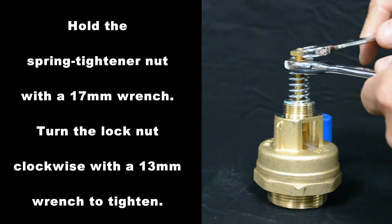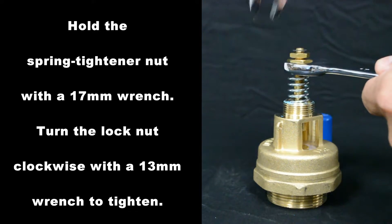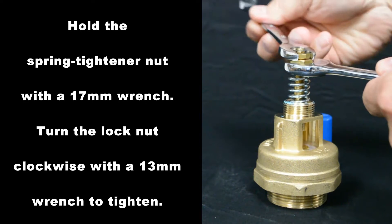Hold the spring tightener nut with a 17mm wrench. Turn the lock nut clockwise with a 13mm wrench to tighten.